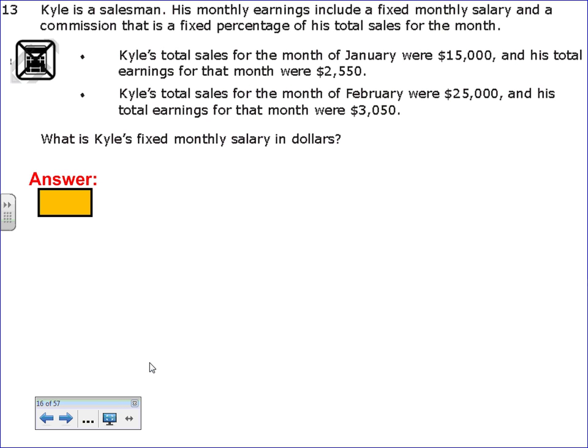Number 13. Kyle is a salesman, and his monthly earnings include a fixed monthly salary and a commission that is a fixed percentage of his total sales for the month. Kyle's total sales for the month of January were $15,000, and his total earnings were $2,550. Kyle's total sales for the month of February were $25,000, and his total earnings were $3,050. What is Kyle's fixed monthly salary?